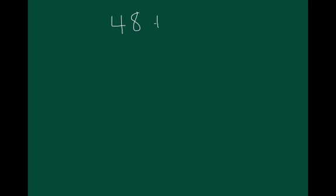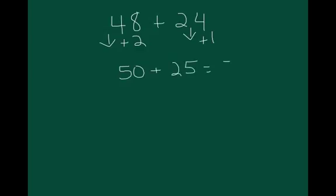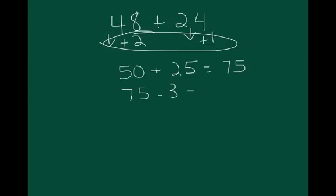Alright, so let's think about another compensation addition problem. What if we had 48 plus 24? Now, 25's are really friendly for most kids because of quarters and money. So I could think about 48 as being close to 50. So 48 plus 2 is 50, plus 1 for our 24 is 25, 50 and 25 is 75. But then, I had added 3 extra, so I'm going to go ahead and subtract that 3. So my answer is 72.